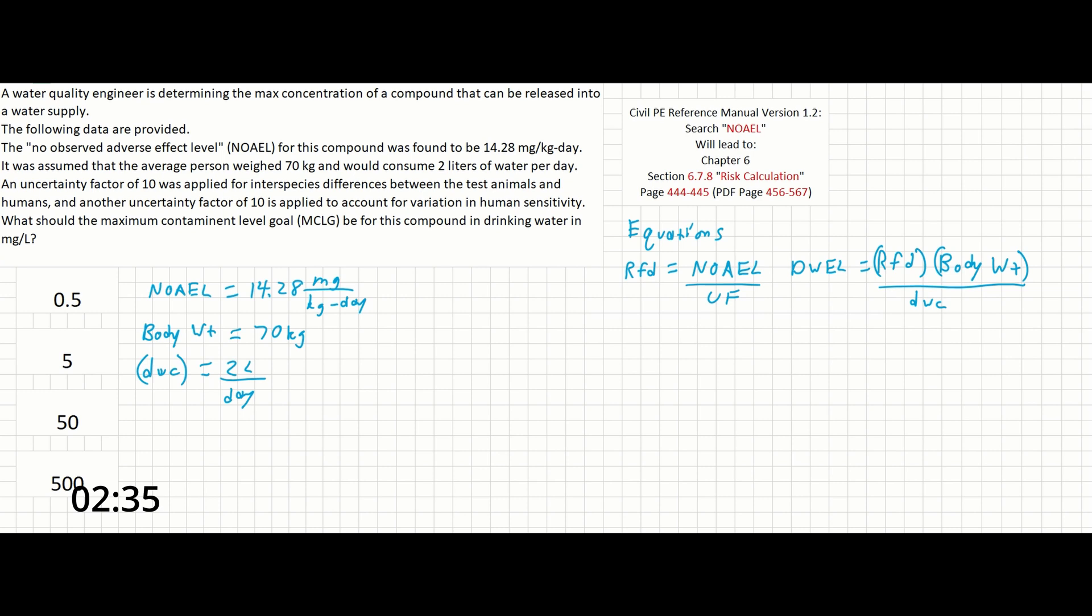There are two uncertainty factors given. We can write out UF1 equals 10, and UF2 equals 10. And finally, we're being asked to find the Maximum Contaminant Level Goal, or MCLG.